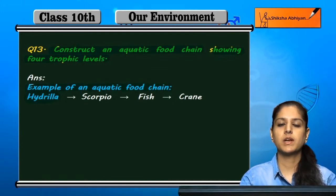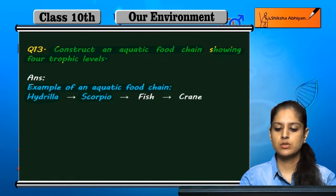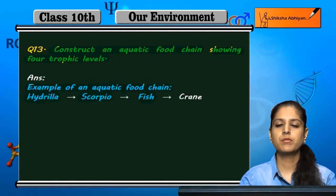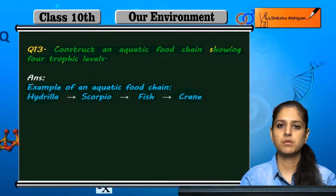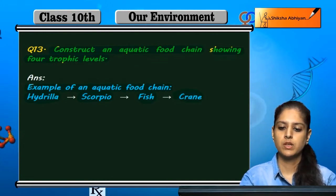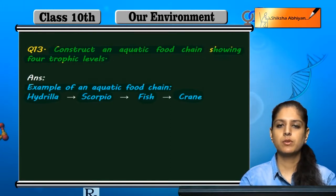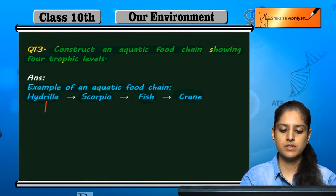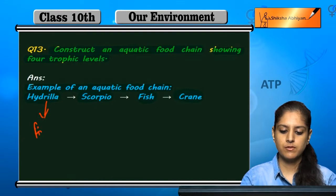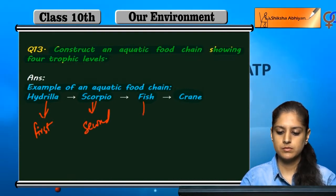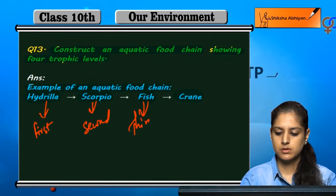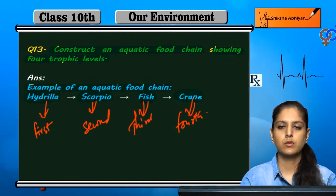Hydrilla — hydrilla is an aquatic plant. Scorpio (a small organism) feeds on hydrilla, then fish feeds on scorpio, and crane feeds on the fish. So this is an example of a food chain showing four trophic levels: first, second, third, and fourth.